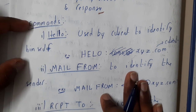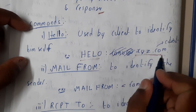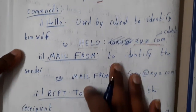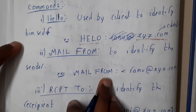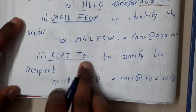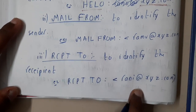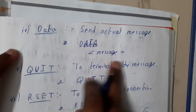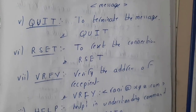Let's go through some basic SMTP commands. HELLO is used by the client to identify himself along with his email ID. MAIL FROM identifies the sender's email ID. RCPT TO identifies the recipient's email ID — for example, sending from Ramu to Rani. DATA shows the actual message content. QUIT terminates the connection, and RESET resets the connection.